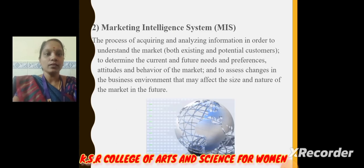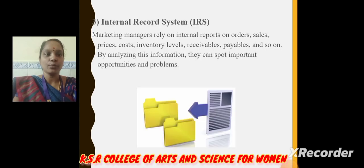Second, marketing intelligence system. This is the process of acquiring and analyzing information in order to understand the market, both existing and potential customers. Next, internal record system.